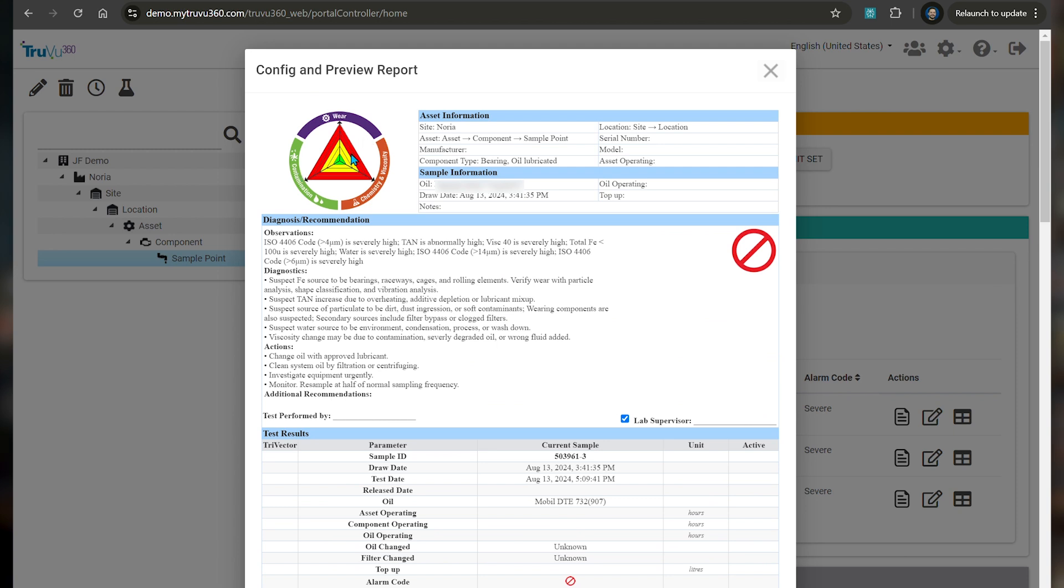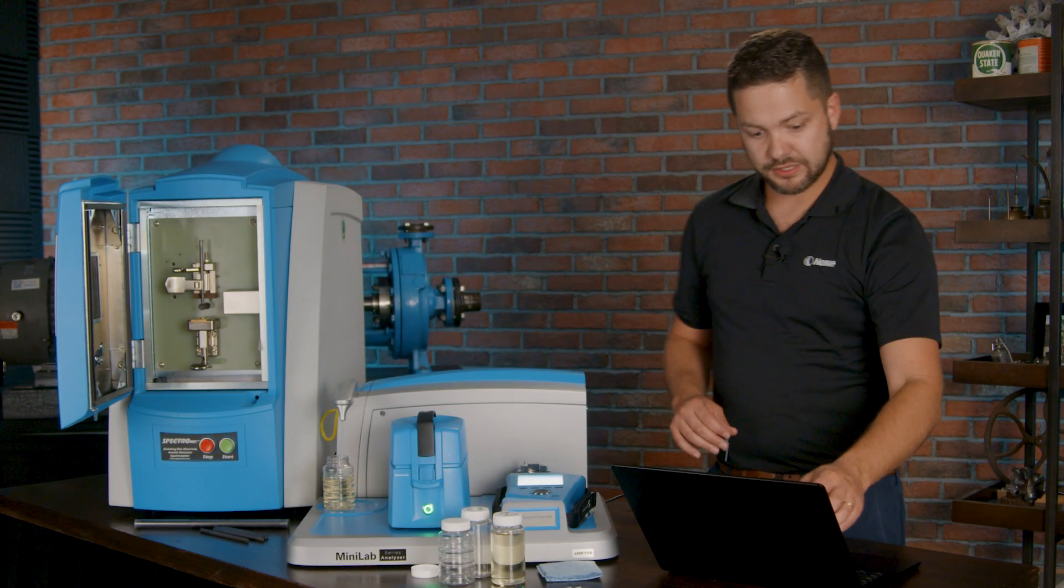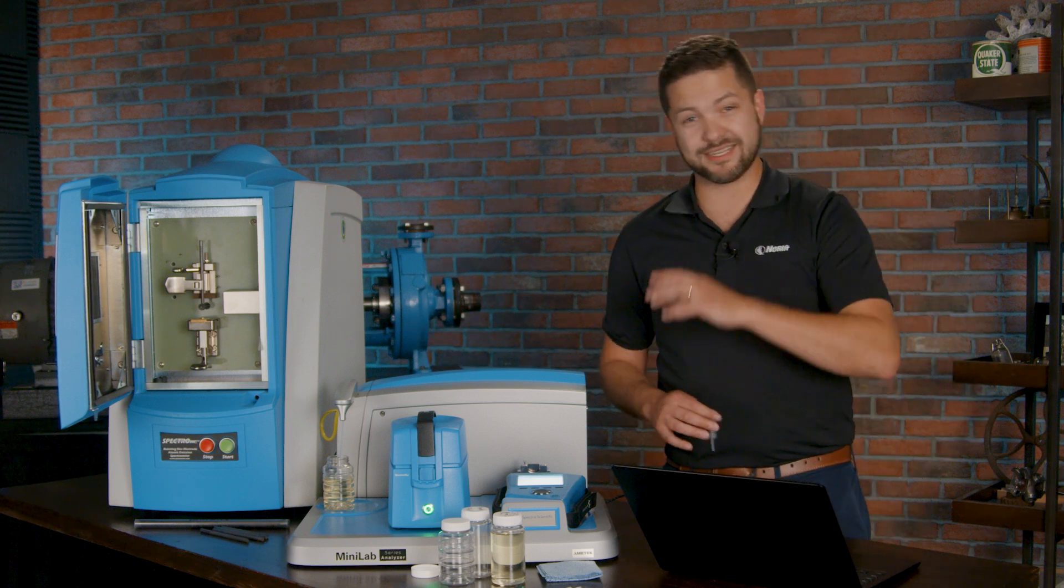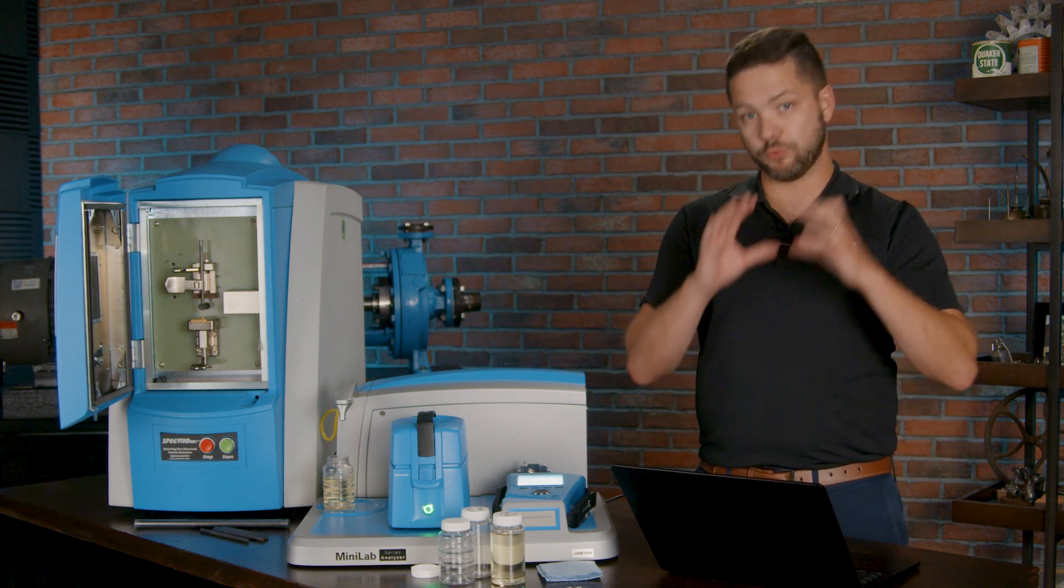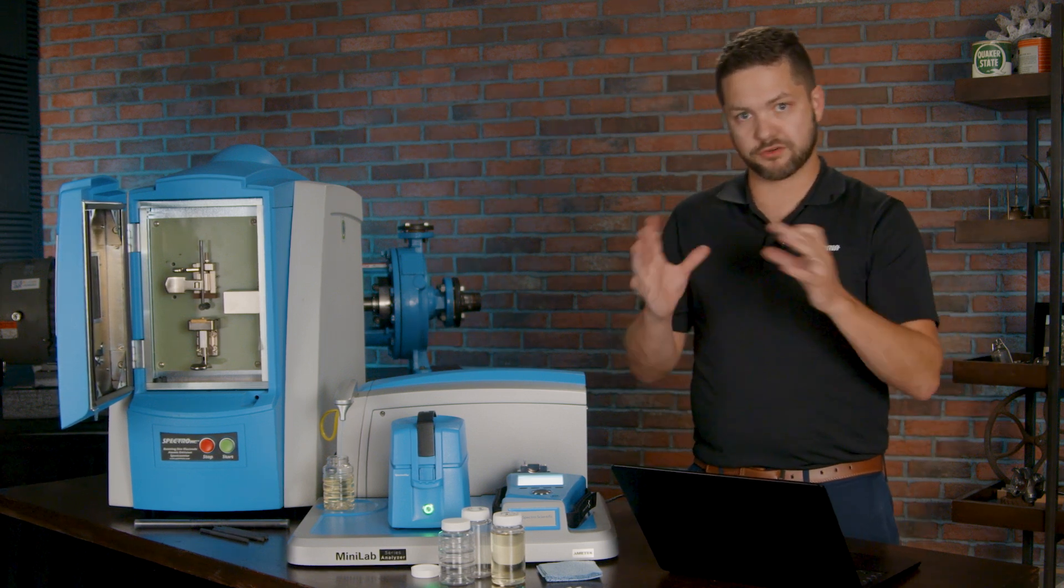Even the tri-vector image here on the top is dynamic. So those three areas, those three zones, will go in or out depending on the severity of the sample that came in. If the oil was completely clean of any wear debris or contaminants or no fluid property concerns, that triangle would be very small in the middle. So that's kind of a quick way to analyze what's going on there.